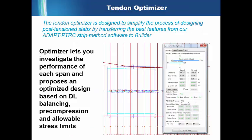Entering tendons into the software is incredibly easy. One of the ways that you can leverage the ADAPT Floor Pro solution for faster and more accurate PT design is to use the Dynamic Tendon Optimizer. This allows you to quickly identify locations where more or less post-tensioning is needed, and the program will tell you what is controlling the design.